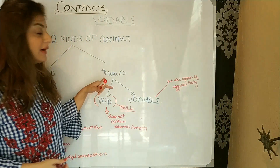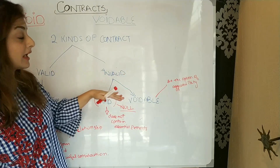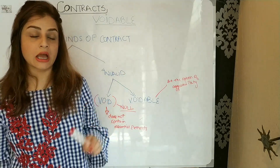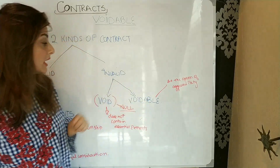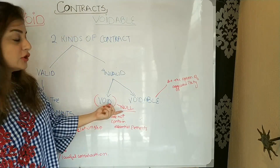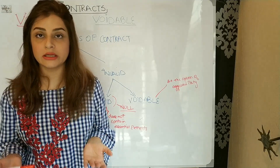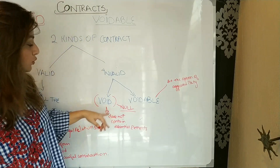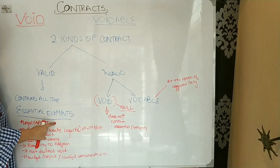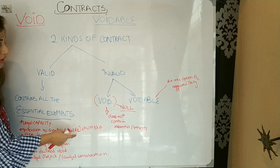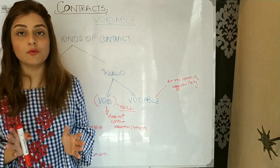Now coming to invalid contracts. There are two kinds: valid contract and invalid contract. In the invalid contract, there are two further kinds — void contract and voidable contract. What is a void contract? It is null and void ab initio, meaning it is not enforceable at law. It is null because all the essential conditions are not available — one or more are missing. Then the contract is void.